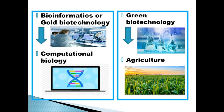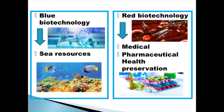Green Biotechnology is biotechnology applied to agricultural processes. The third branch is Blue Biotechnology which is based on the exploitation of sea resources to create products and industrial applications. And the fourth one is Red Biotechnology which is the use of biotechnology in medical and pharmaceutical industries and health preservation.